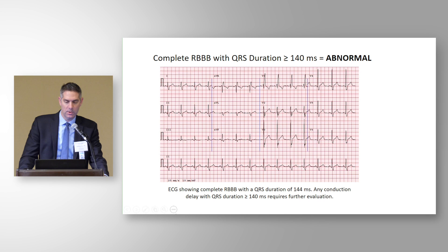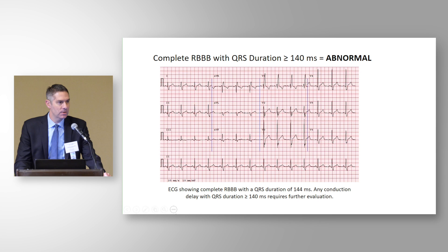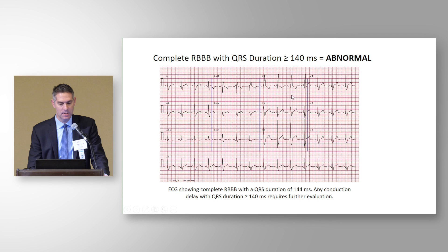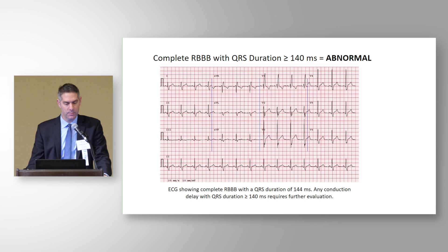This next case gets more complicated. It's another example of right bundle branch block, but with a very wide QRS. In the international criteria, one of the abnormal findings is a QRS duration greater than 140 milliseconds, regardless of morphology — whether it's a bundle branch block or nonspecific intraventricular conduction delay. So although this has a right bundle branch block appearance, the QRS duration greater than 140 milliseconds makes this an abnormal ECG, and I would want to do further investigation beginning with an echocardiogram.